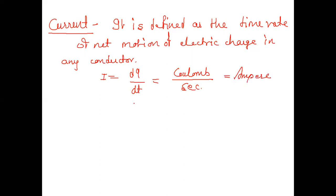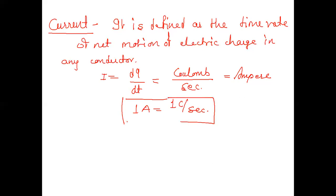The actual unit of current is Ampere. One Ampere is equal to one Coulomb per second. This is the basic formula related to current. So we now identify: voltage — one Volt equals one Joule per Coulomb; and current — one Ampere equals one Coulomb per second.